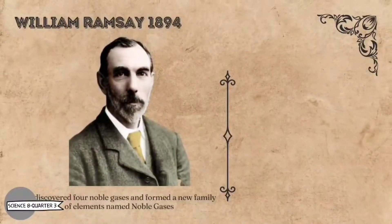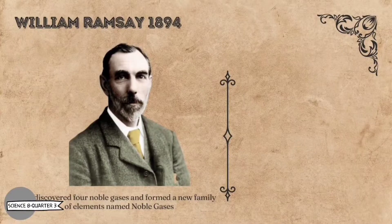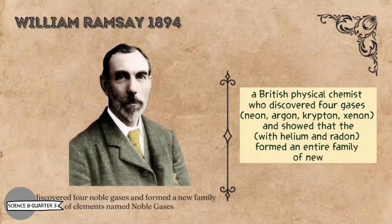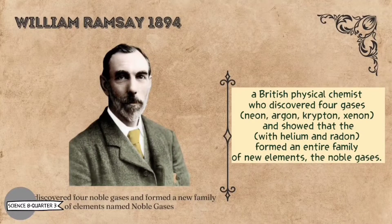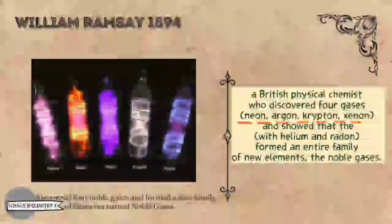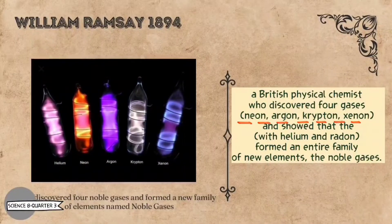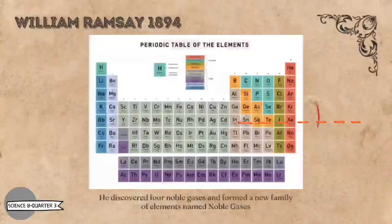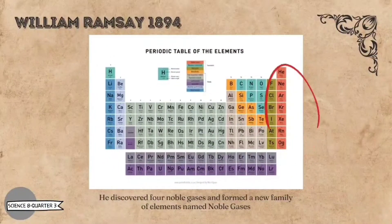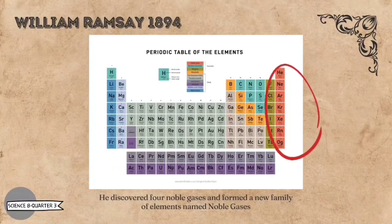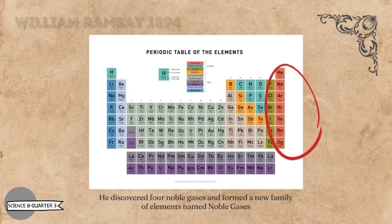In 1894, Sir William Ramsay, a British physical chemist, co-discovered four gases: neon, argon, krypton, and xenon, and showed that they, with helium and radon, formed an entire family of new elements, the noble gases.